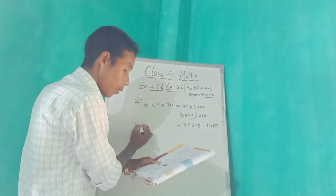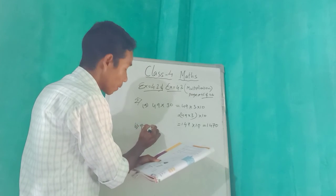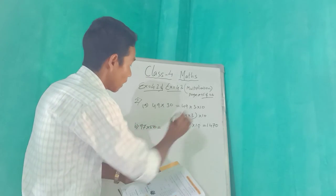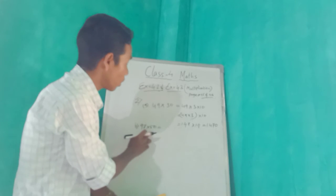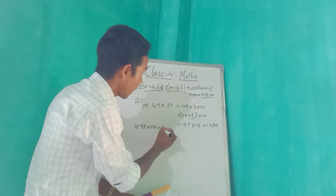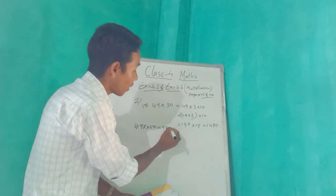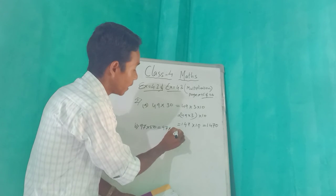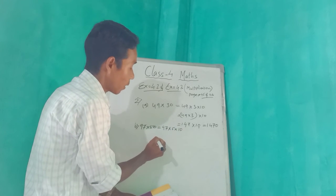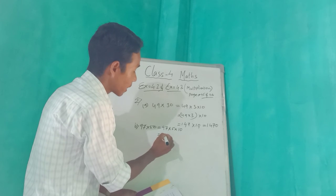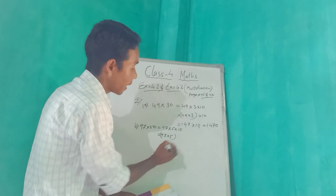Now I am going to do number B. Look here everyone. Number B: we have 97 into 50. So 97 into 50 means we write 97 into 5 — the 0 means times 10. So we have 97 into 5 in bracket, into 10.